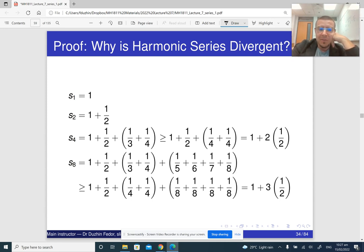Now the fourth partial sum is the following. Here we add these two extra terms, 1 third and 1 quarter. Now we're going to have a little trick. If we replace 1 third with 1 quarter, then we're going to get something that is smaller. But 1 quarter plus 1 quarter is really just 2 quarters, so 2 times 1 quarter, which is 1 half. So it means that the fourth partial sum is bigger than 1 plus 1 half plus 1 half, so it's 2 times 1 half.